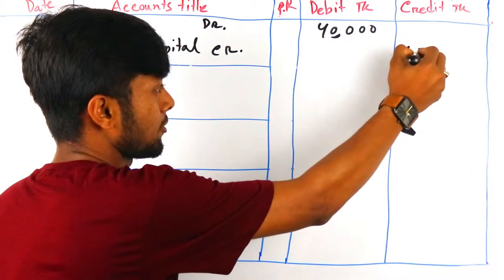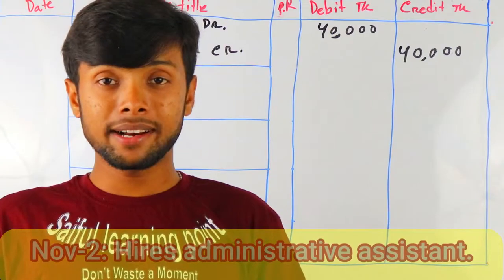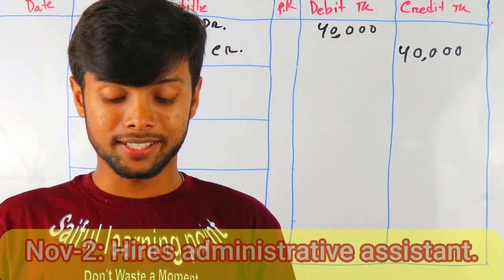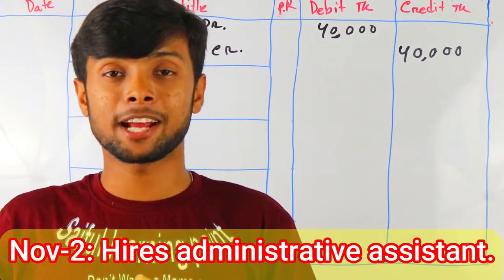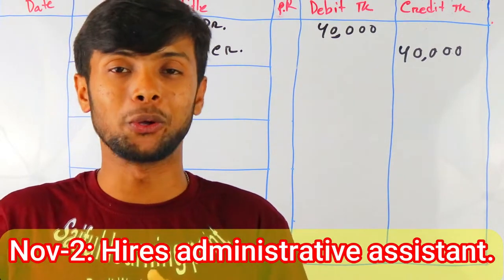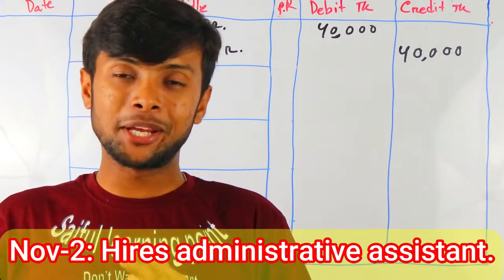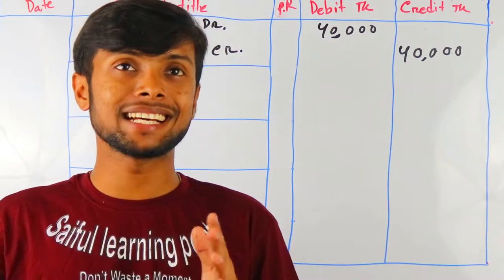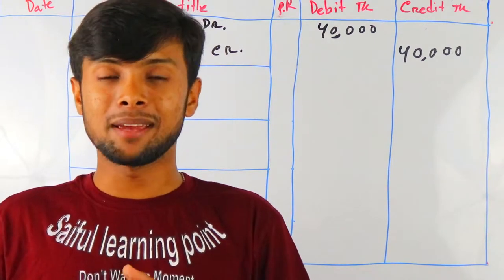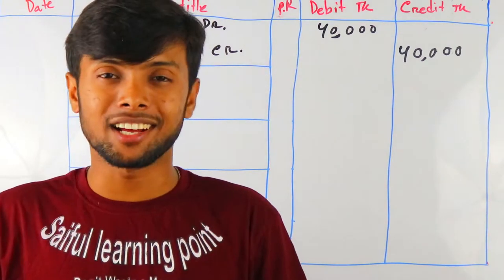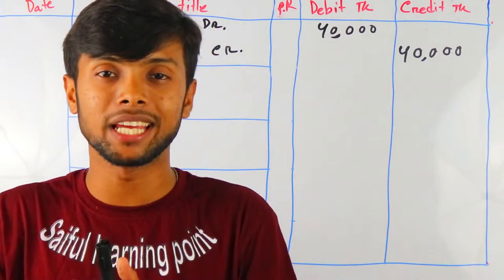Dwi nama par entry — this is a dual-name entry. Hires an administrative assistant. No transaction, because it doesn't accord any financial change — no financial transaction has occurred here.